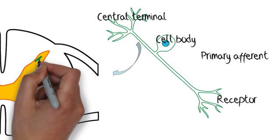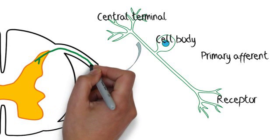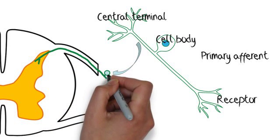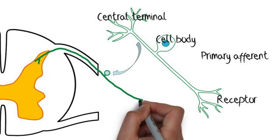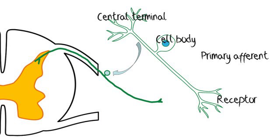If we draw this even more diagrammatically, it would be drawn situated like this in the cross section of the spinal cord, and that's the type of diagram you'll see from here on.